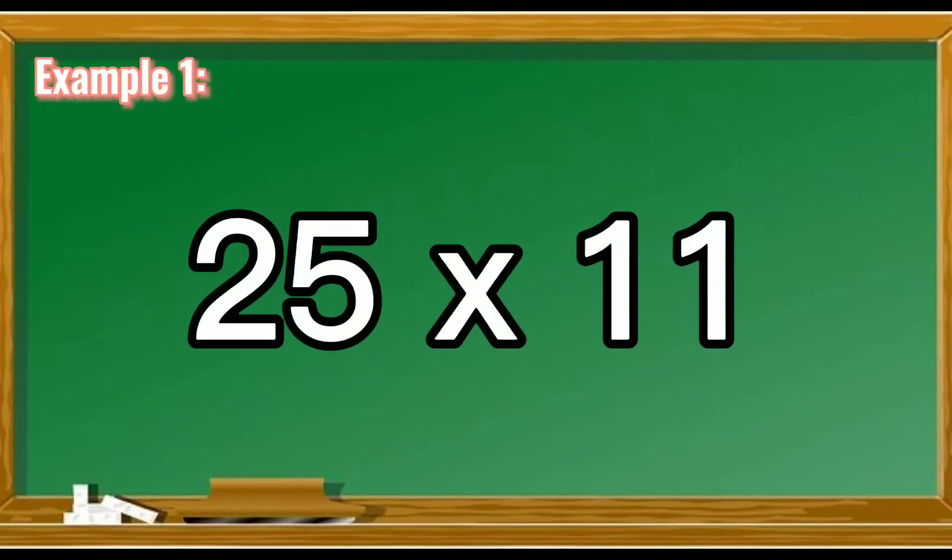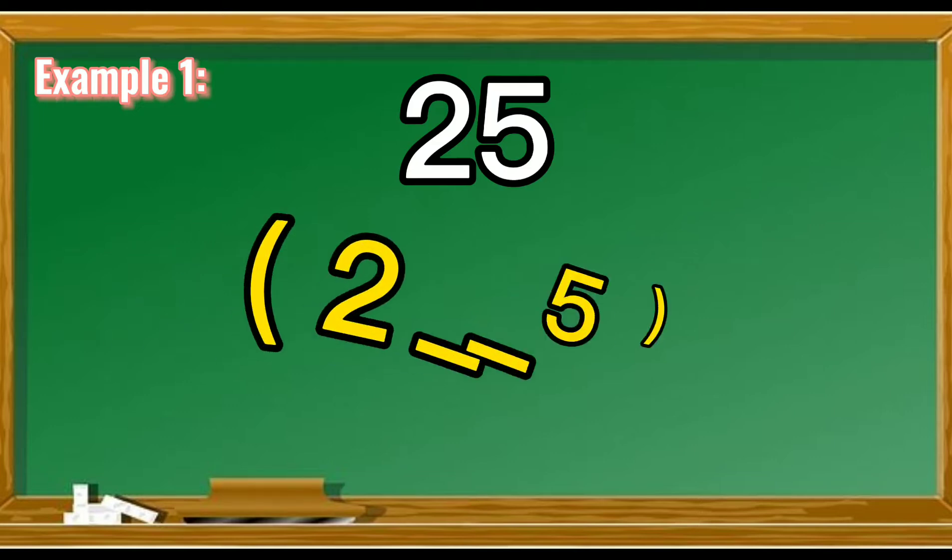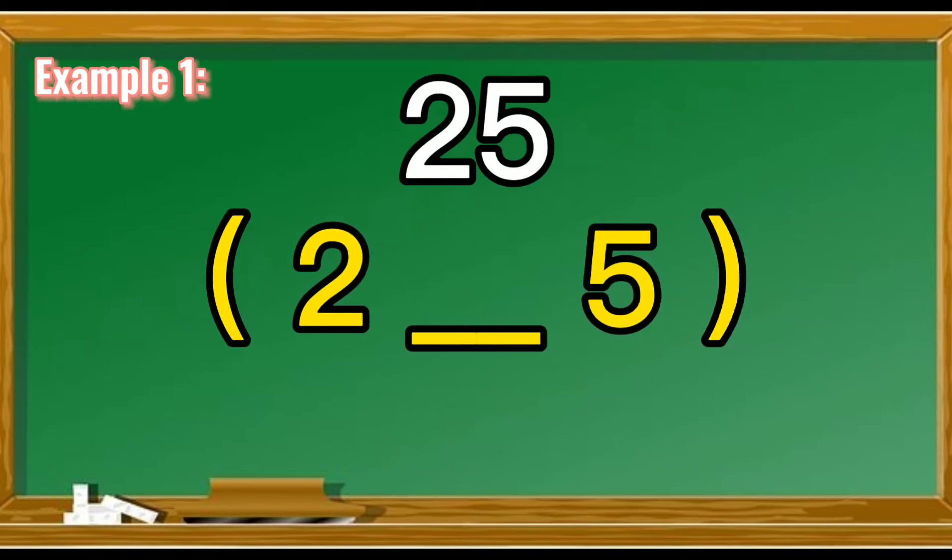For example, we have 25 times 11. To give you the answer, let's focus on the number that is being multiplied by 11. All you have to do is separate the first and last digits in your mind like this. Remember, for a two-digit number, there will be one digit in between the first and last digits.